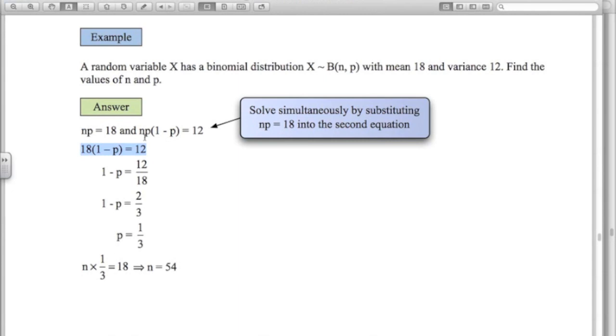Now divide both sides by 18. You could expand the brackets here but it's easier to divide by 18. So 1 - p = 2/3, so p must be 1/3.